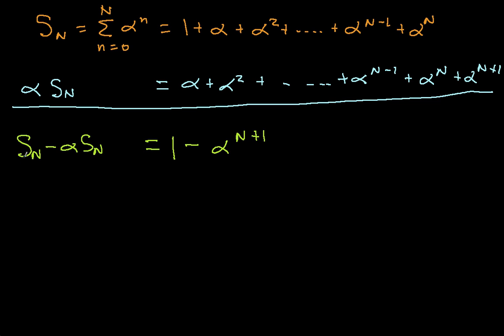Now here, on this side, I can factor an S sub N out. So I have S_N times 1 minus alpha equals 1 minus alpha N plus 1. And I divide both sides by 1 minus alpha, which I can do if alpha is not equal to 1. And I get S_N, the sum that I'm actually trying to find, is 1 minus alpha N plus 1 over 1 minus alpha. So there you have it. For finite N, so I'm summing cap N, actually cap N plus 1 values here, this is the equation.